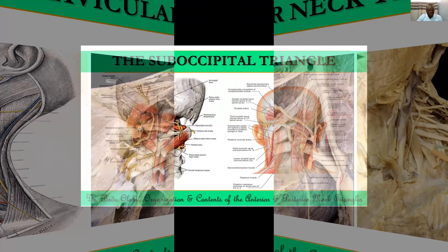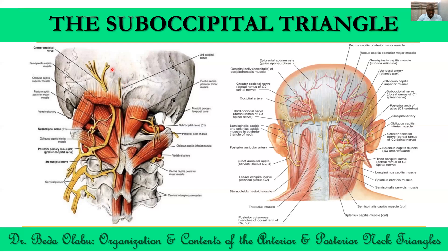Finally, the suboccipital triangle is a deep triangle between the posterior aspect of the occipital bone and the upper two cervical vertebrae, bounded by three muscles. The major content of the suboccipital triangle is the vertebral artery — constituting the third part of the vertebral artery. We also have the suboccipital nerve, which is the C1 nerve, and the suboccipital venous plexus around the area. On the roof of this triangle we have semispinalis capitis, and on top of that the superior fibers of trapezius.